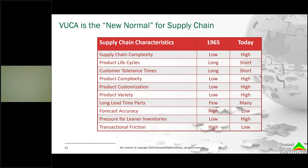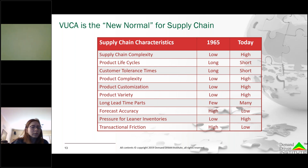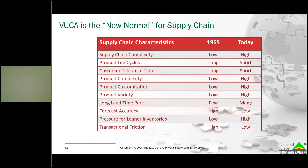The other side of transactional friction is finding a new supplier. We used to use the Thomas Register, going through books to find candidates. Today? Six letters: Google. Within a few hours you can have a short list of candidates. So it's easier to purchase things and easier to find new places to purchase them.